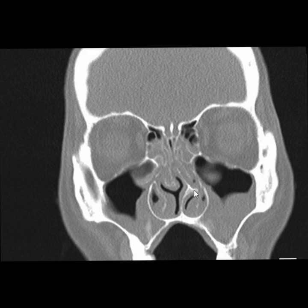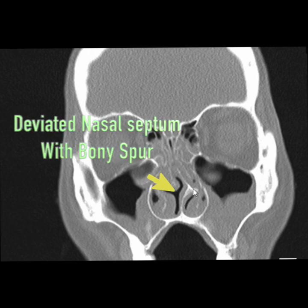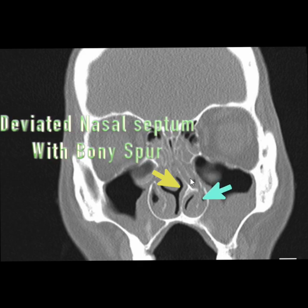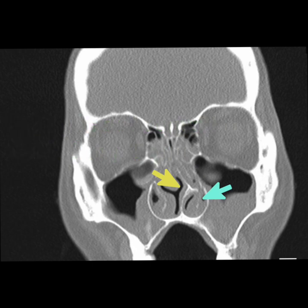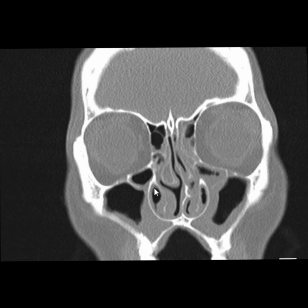This is another important finding: a massive deviated nasal septum with a large bony spur impinging on the inferior turbinate. This has caused a lot of crowding over here. Moving a couple of sections back, there's also a Haller cell — so obviously the ostiomeatal complex will get blocked on the left side. On the right side, there is no deviation, but there was enough space and the inferior turbinate has grown — so there is unilateral enlargement of the inferior turbinate.